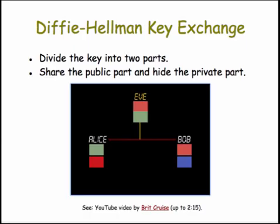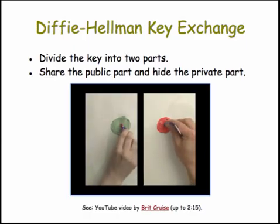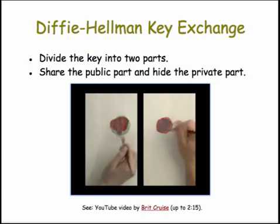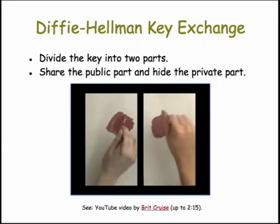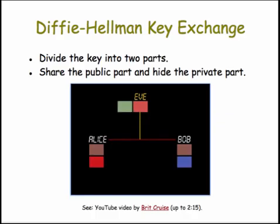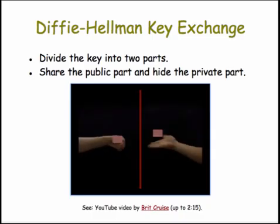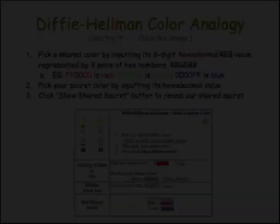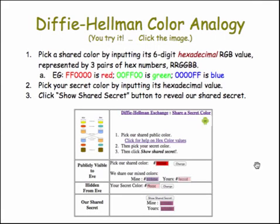Now, the heart of the trick. Alice and Bob add their private colors to the other person's mixture and arrive at a shared secret color. Notice how Eve is unable to determine this color since she needs one of the private colors to do so. And that is the trick. That's a great analogy of the one-way function and the Diffie-Hellman key exchange algorithm.